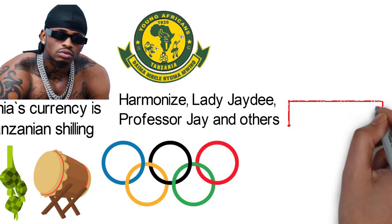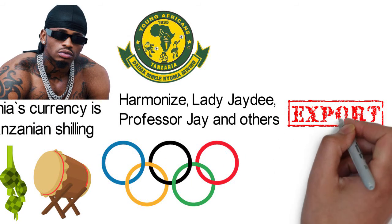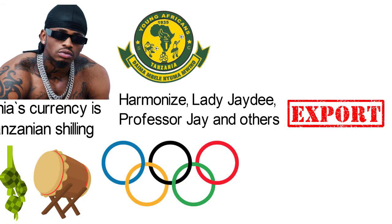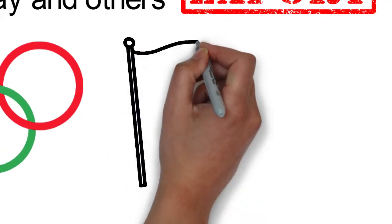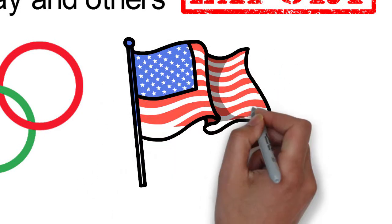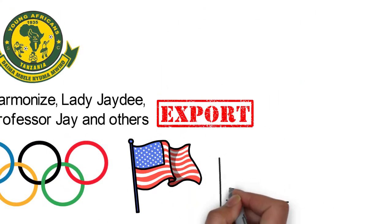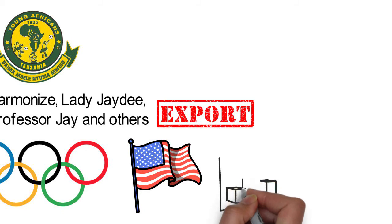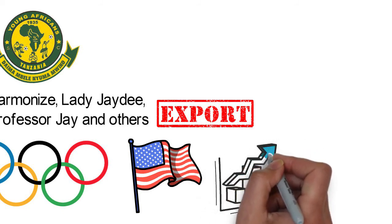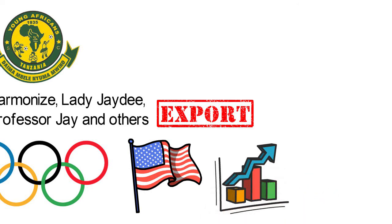Their main trading partners are China, with 20.7% of imports, Rwanda with 18.7% of exports, India, Kenya, the Democratic Republic of Congo, the United States, and others. Like many other countries, they have been hit with the recent economic crisis, but the government is doing everything possible to put the economy back on track.